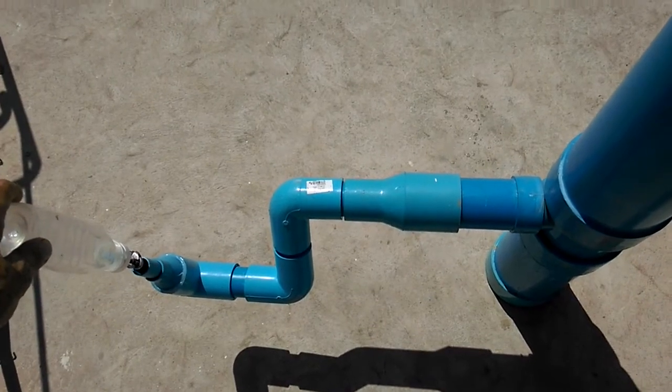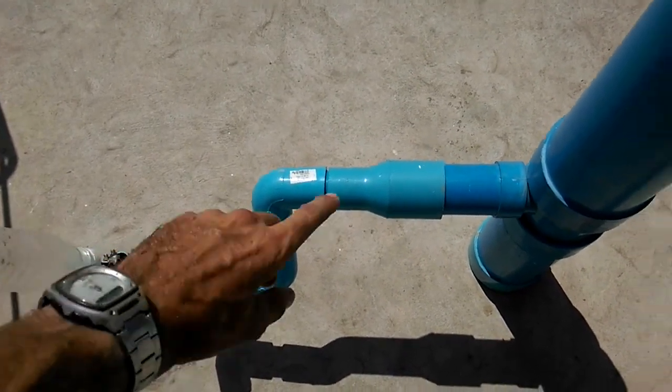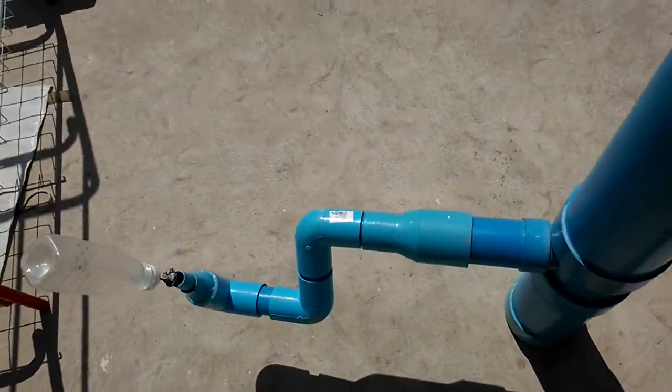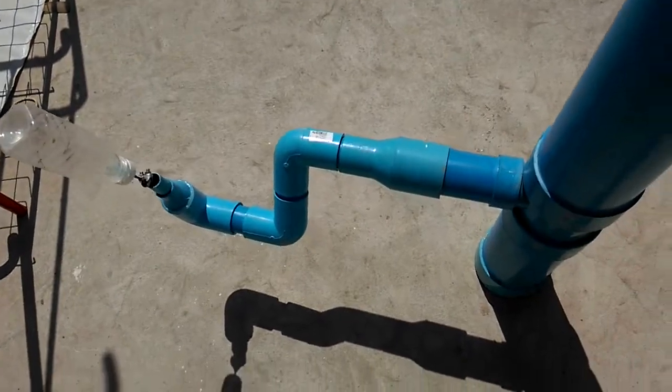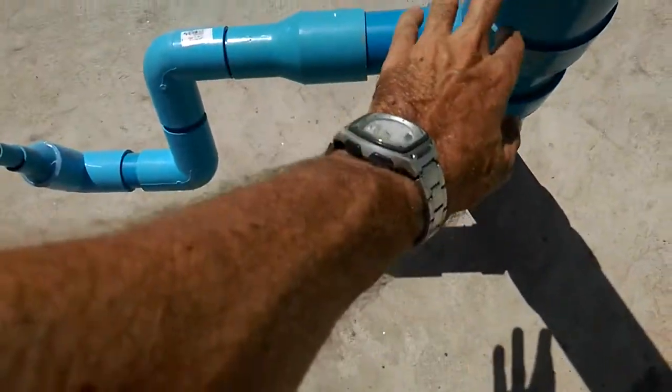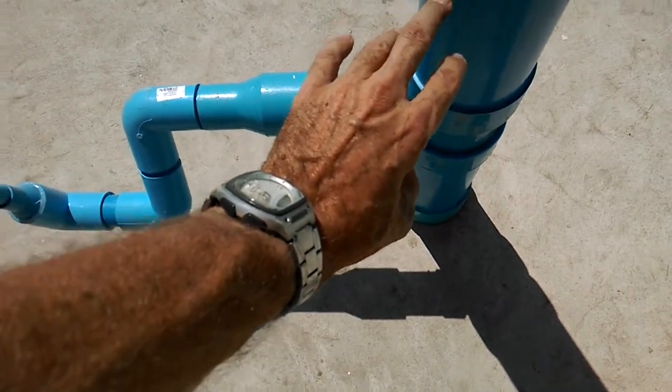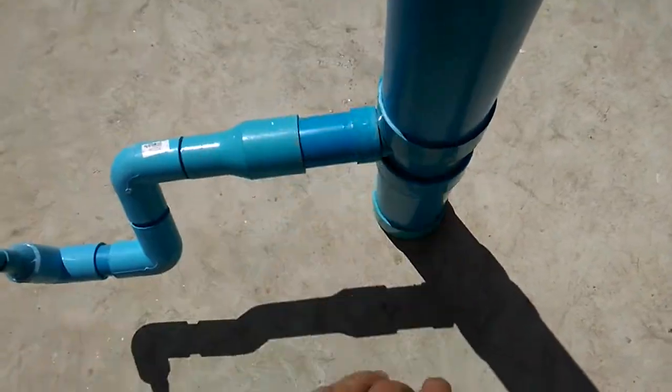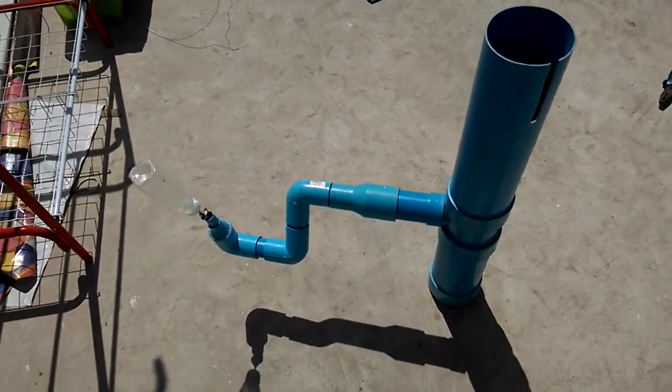When it gets below a certain level, the float drops down a little bit, the water starts to come out, which means the pressure here drops, which means it should drop faster, I hope. Then that will let all this water out down to whatever that level is. It just needs to go down to somewhere around here, and once it drops, then this will drop quickly.